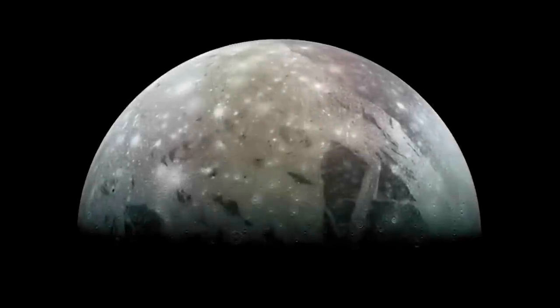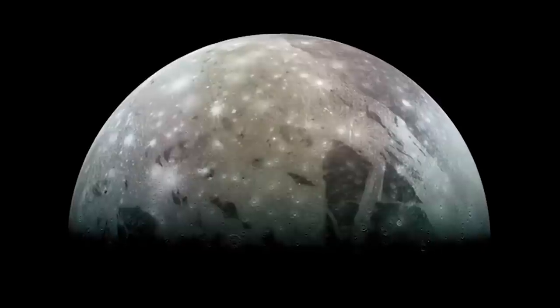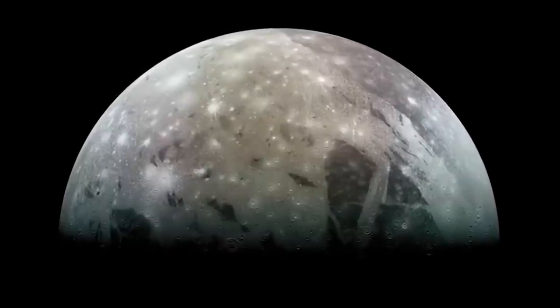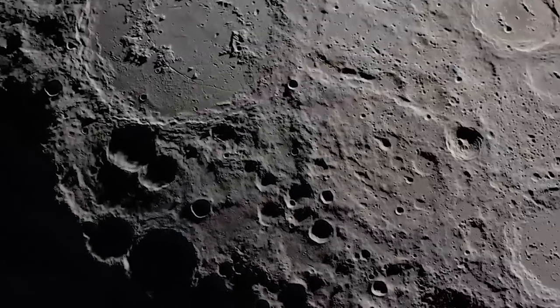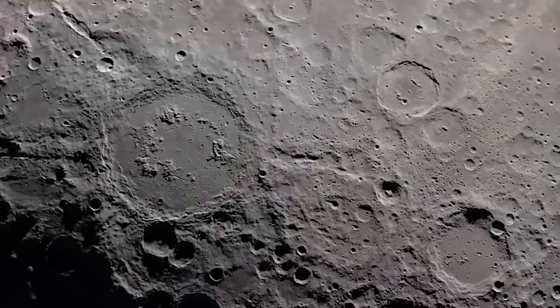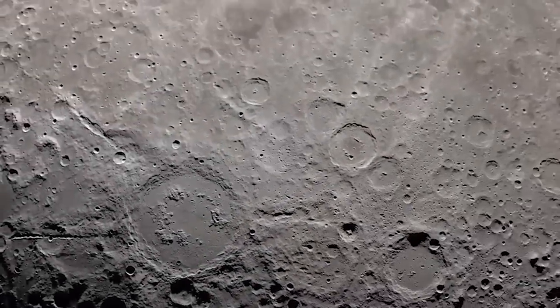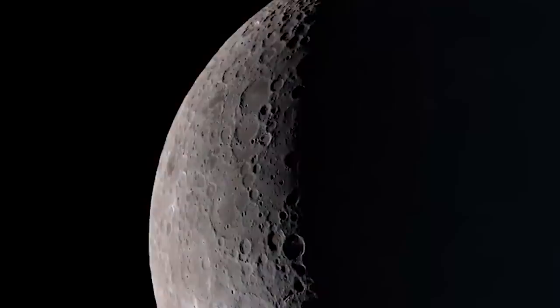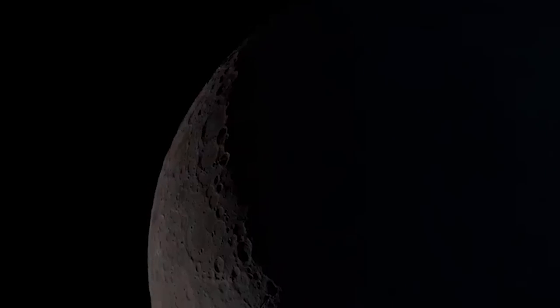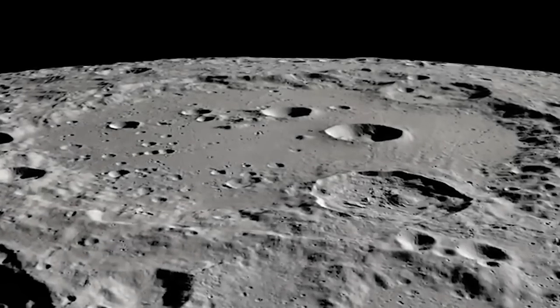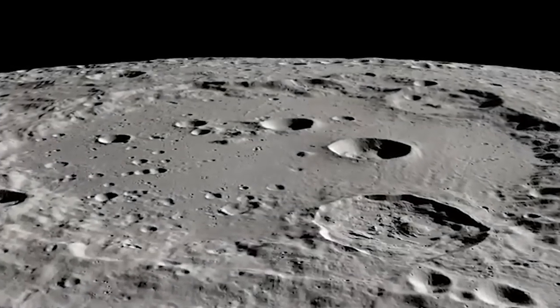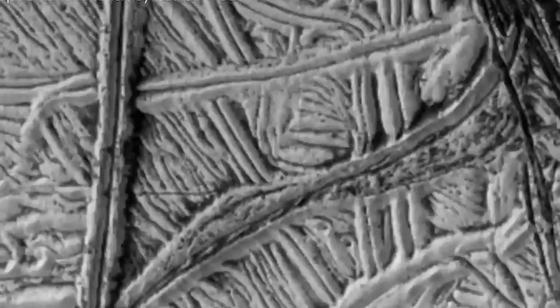On its surface, we can observe great differences in temperature. Some of its craters permanently immersed in shadow can reach minus 248 degrees or minus 414 degrees Fahrenheit. While in other places, the temperature rises to 123 degrees or over 253 degrees Fahrenheit.